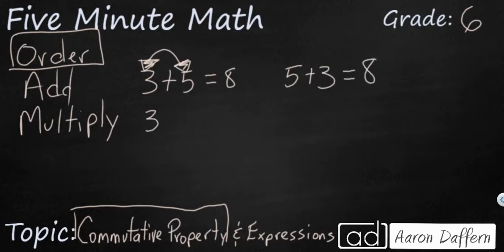Let's keep the same digits, but let's just change the operation. Let's do 3 times 5. So our two factors are 3 and 5. That's going to make a product of 15. If we change the order of the factors and we do 5 times 3, that is still going to be 15.